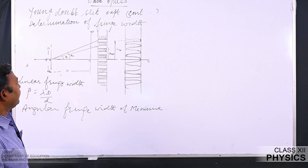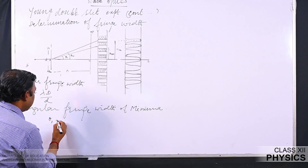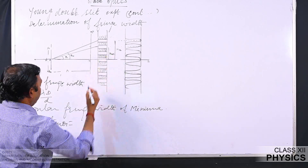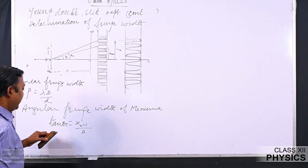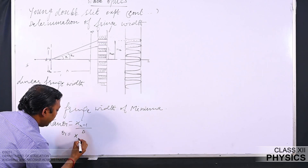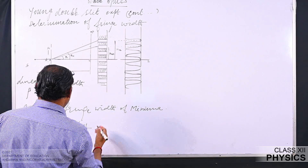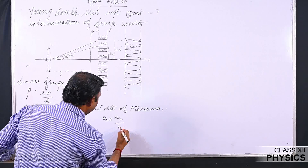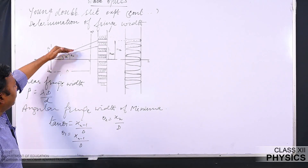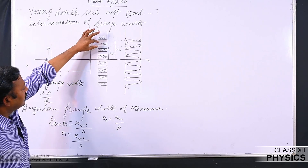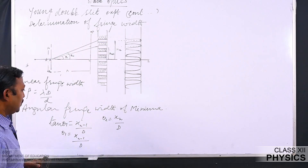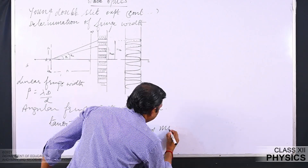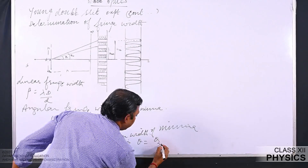Using trigonometry, tan(theta_1) = x_(n-1) / D. If theta is very small, tan(theta) ≈ theta, so theta_1 = x_(n-1) / D. Similarly, the angular spread of the next maxima is theta_2 = x_n / D. The difference between the angular spread of two consecutive maxima gives the angular width of the minima lying between them, so angular width theta = theta_2 minus theta_1.